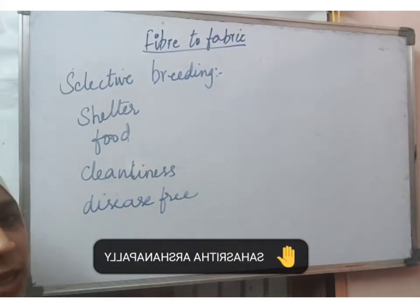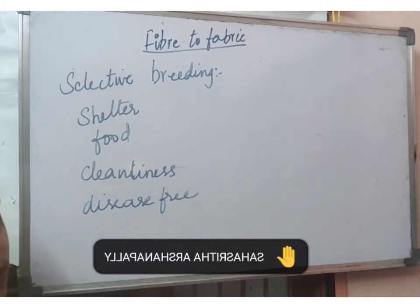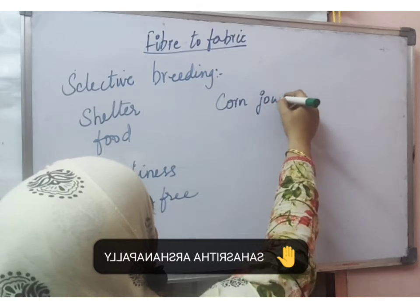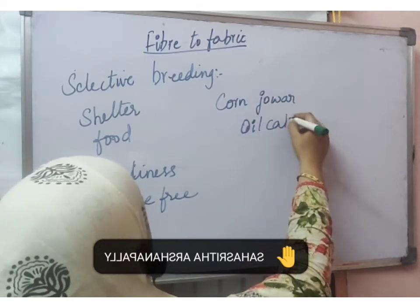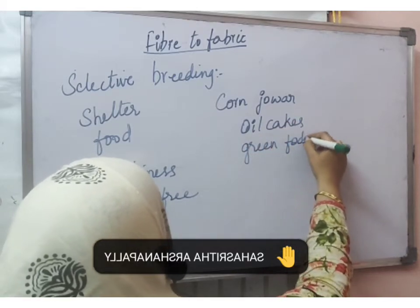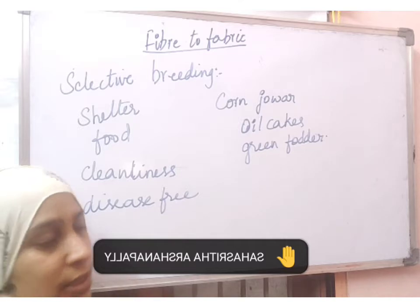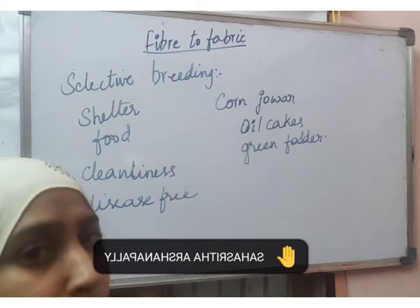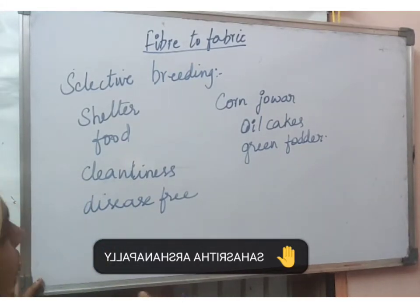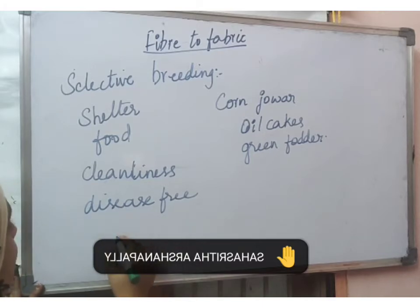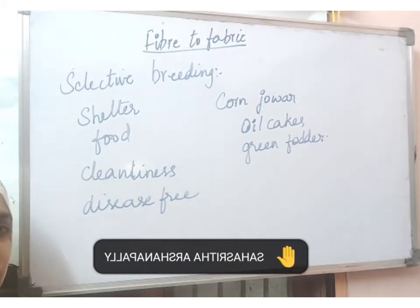Sheep usually eat wet grass, but along with that, different kinds of foods are also supplied so that the wool grows very well — like oil cakes, corn, jowar, and green fodder rich in seeds. These are all given to the sheep so that it produces a good amount of quality wool. If cleanliness is not maintained, they may be infected with worm infections, which may lead to the death of the sheep, causing loss for the farmer.